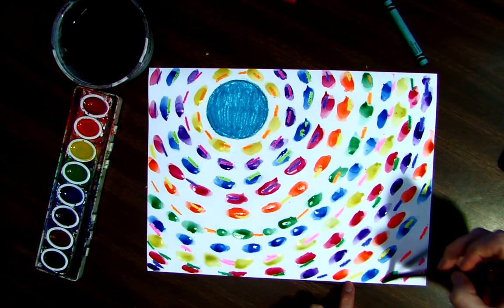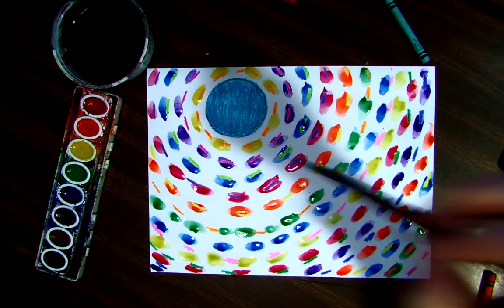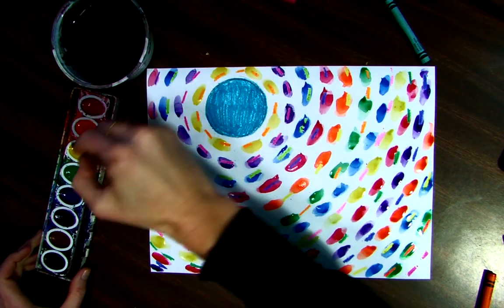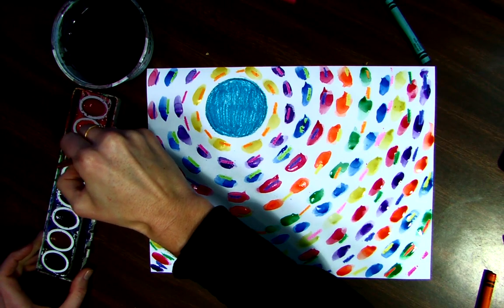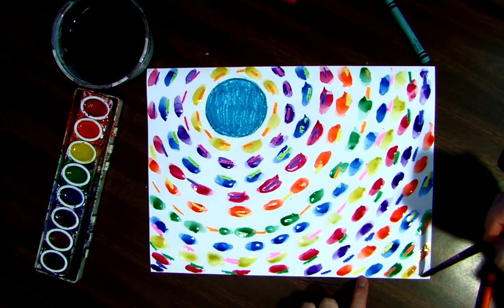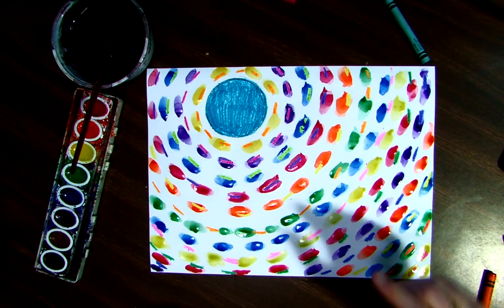Do some blue. Do some green. Almost done. I love coming back to that yellow too. How beautiful. Look at all those beautiful colors and you can still see the colors of your crayon too.